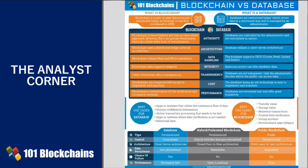Blockchain, on the other hand, uses a distributed ledger network architecture. It's a peer-to-peer enabled network, where each peer can connect with any other using secure cryptographic protocols. There is no centralized node to validate the data exchanged. Peer nodes collectively take part in the consensus mechanism. The database doesn't require a consensus algorithm and is completely dependent on the centralized server.